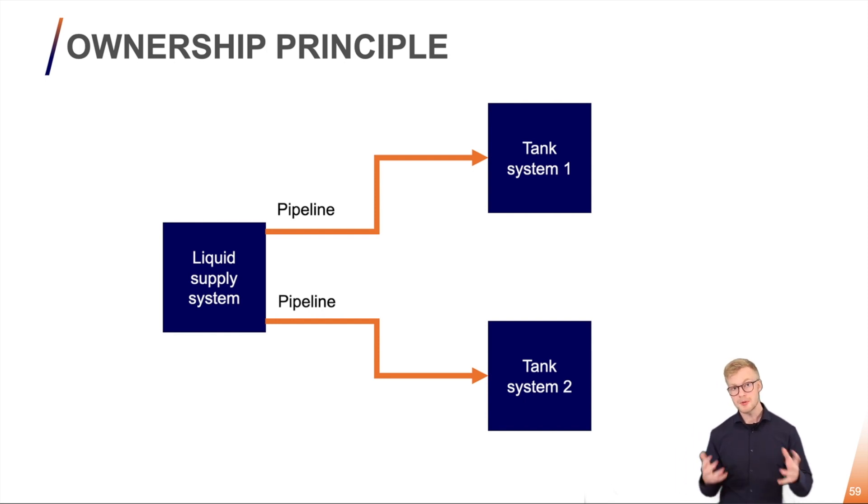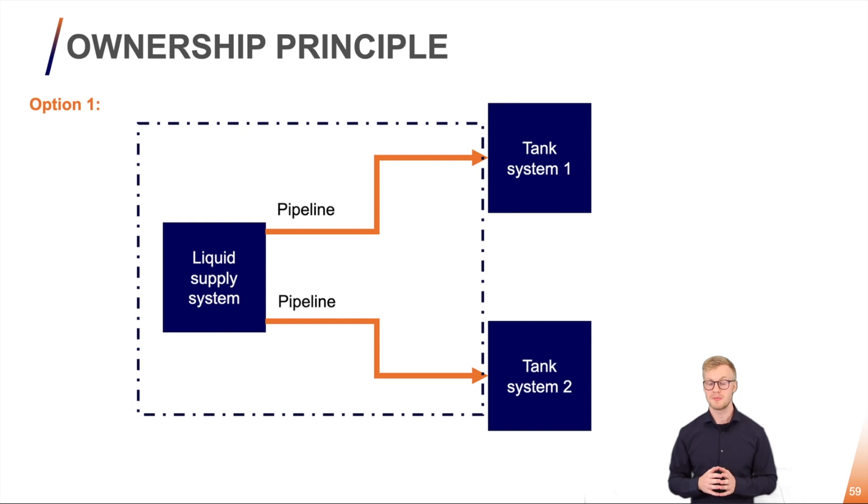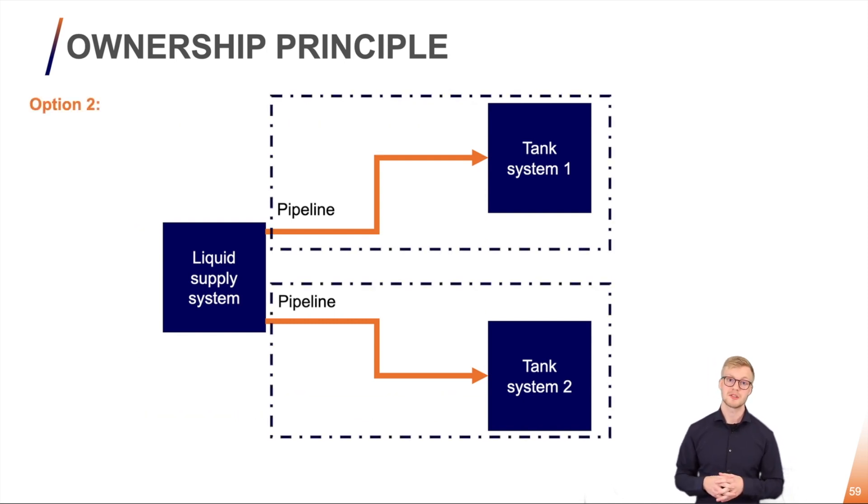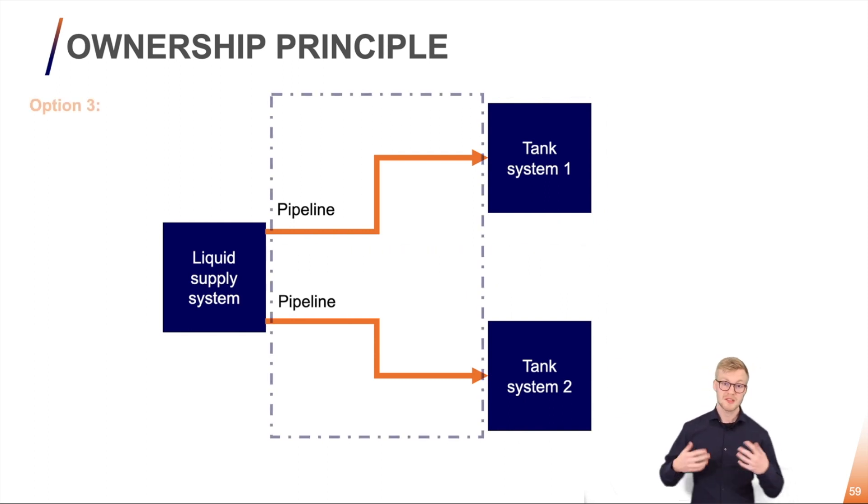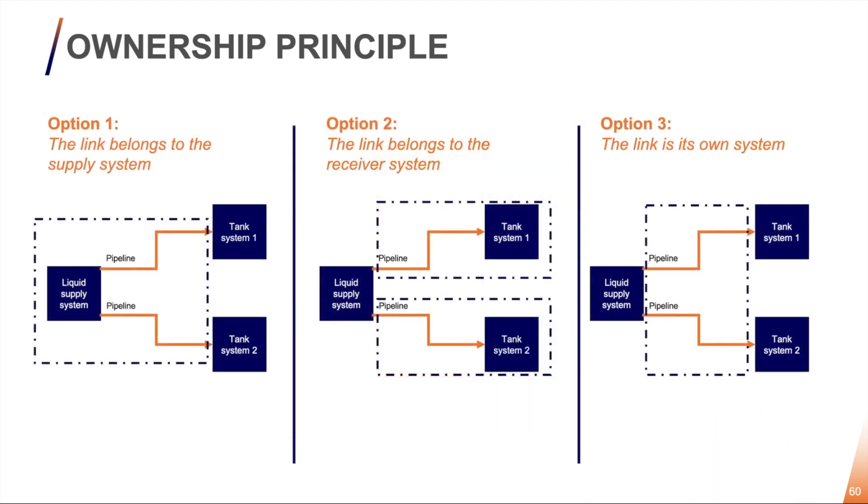We have a few options. Option number one, a transfer system should belong to the supplying system. Option number two, a transfer system should belong to the receiving system. Option number three, a transfer system should always be considered its own system. So take a look at the three options here. Pause the video and maybe give it a thought of your own.